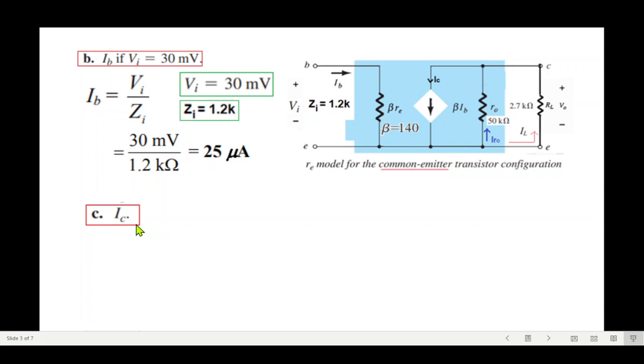Part c is the current ic. ic current is actually beta times ib, so beta times ib. Plugging in the values, ic will be 3.5 milliampere.